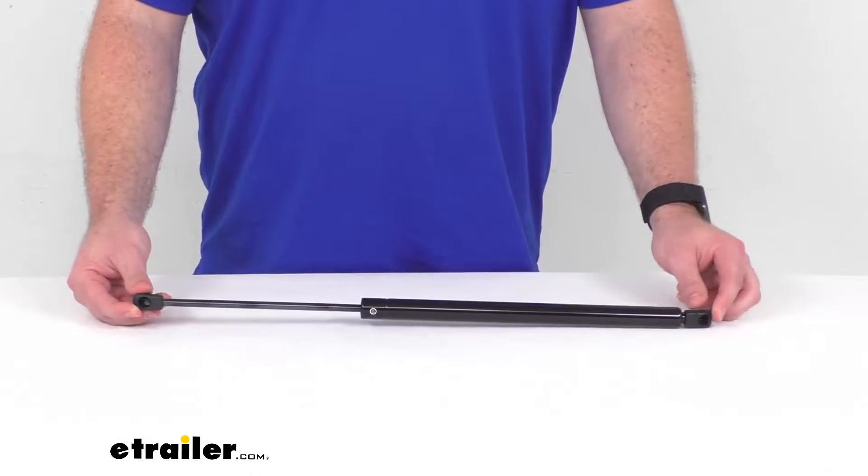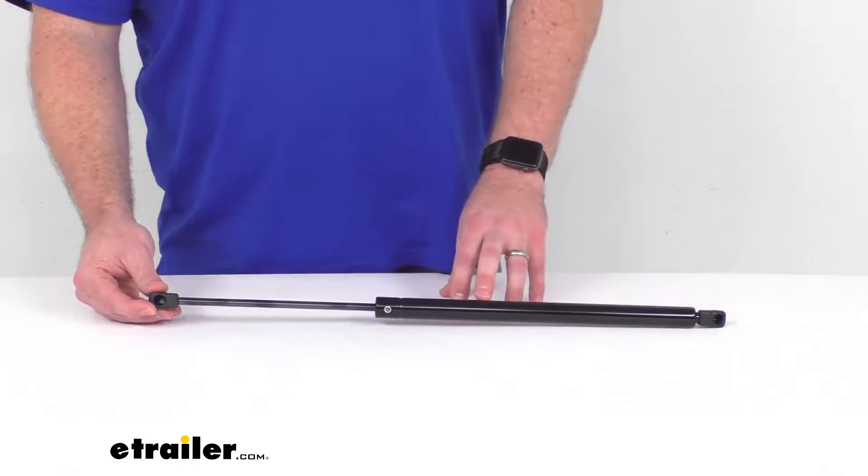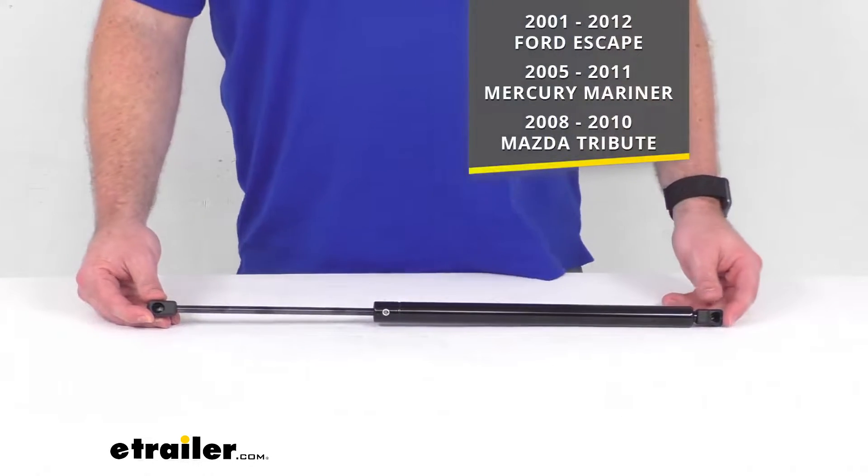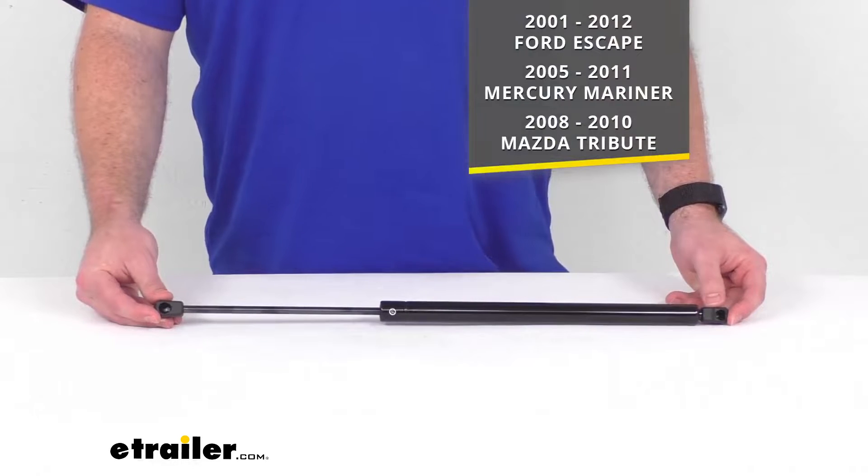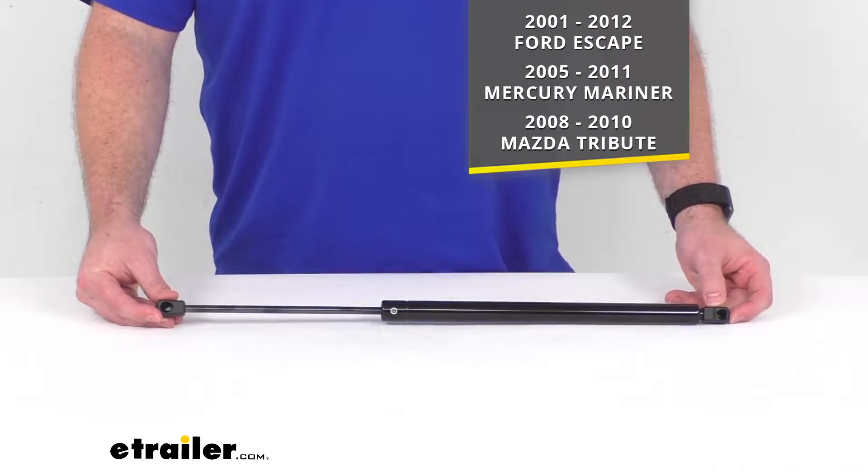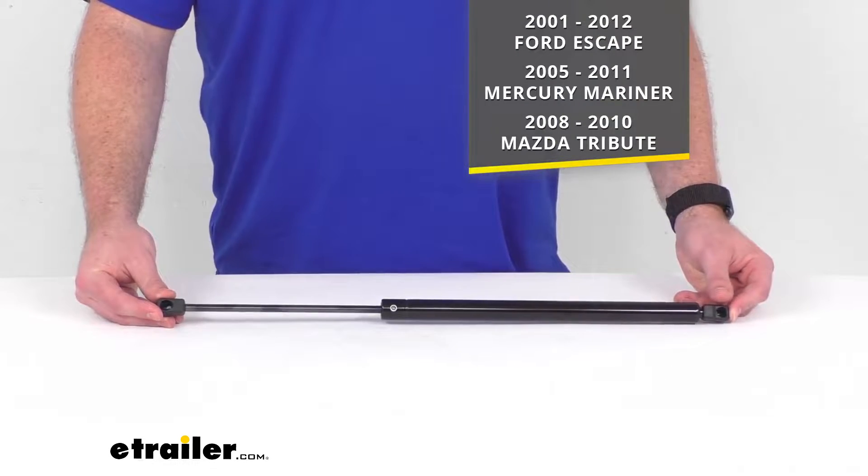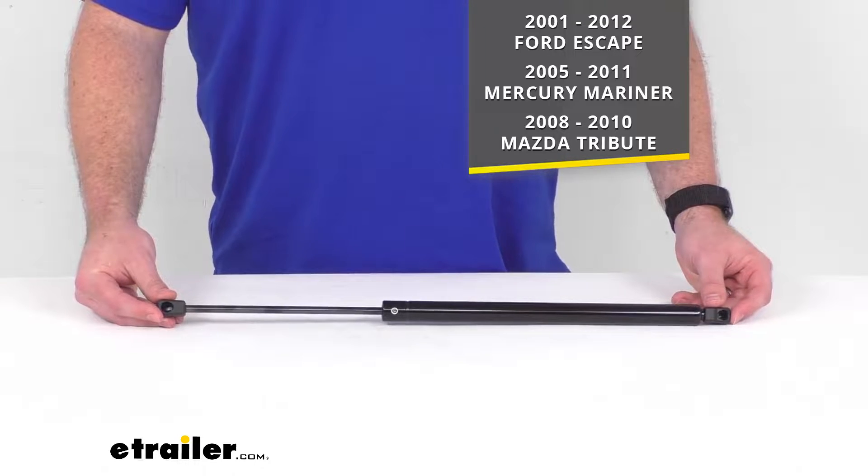This gas strut is going to replace one hatch lift support arm for your 2001 through 2012 Ford Escape, your 2005 through 2011 Mercury Mariner, and your 2008 through 2010 Mazda Tribute.